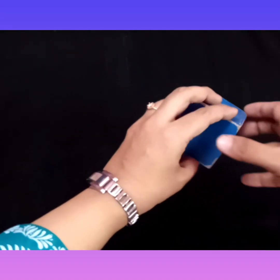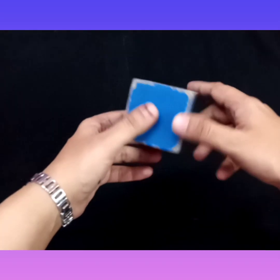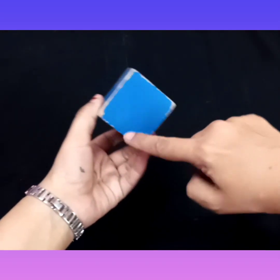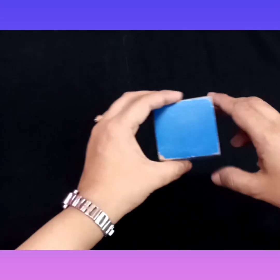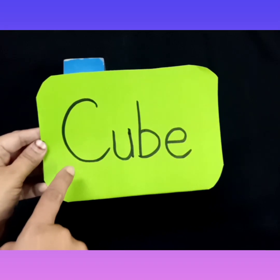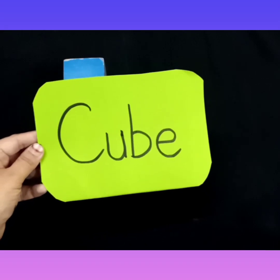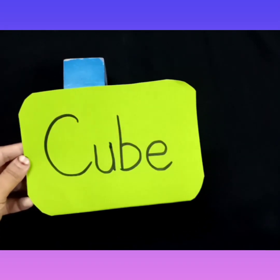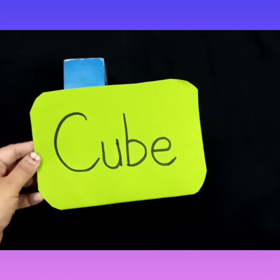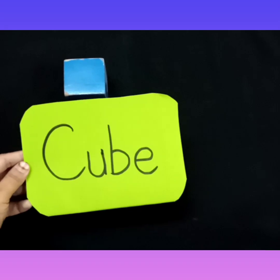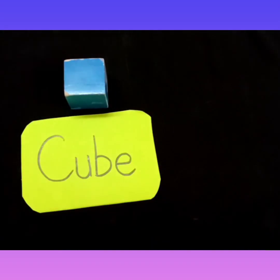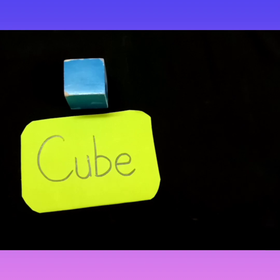What is a solid shape? Solid shapes — we can feel them. Which shape is this? It has equal size. Yes, it is a cube! The spelling of cube is C-U-B-E. We have learned sphere, cylinder, and cone. And this is cube — C-U-B-E. This is the cube shape.